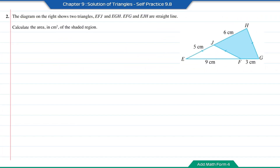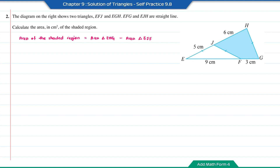The diagram shows triangle EF and EGH are straight lines. Calculate the area in cm² of the shaded region. To find the area of the shaded region, we use the area of triangle EGH minus the area of triangle EJF. Based on the diagram, the lengths of JF, HG, and EJ are each equal to 5 cm. For triangle EHG, the three side lengths are not individually given, so we use Heron's formula.